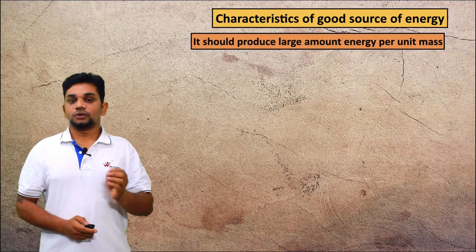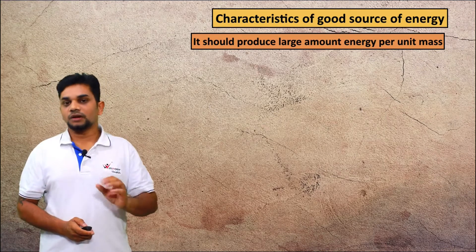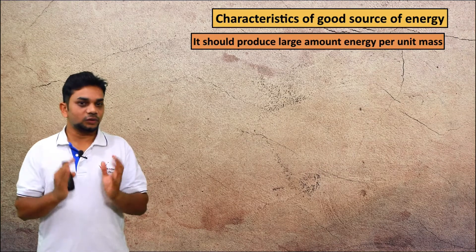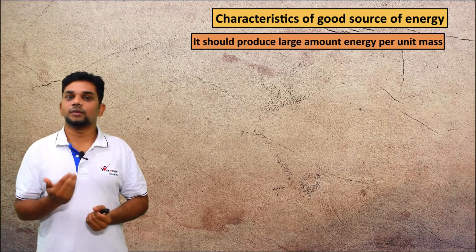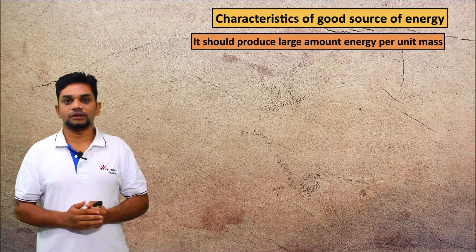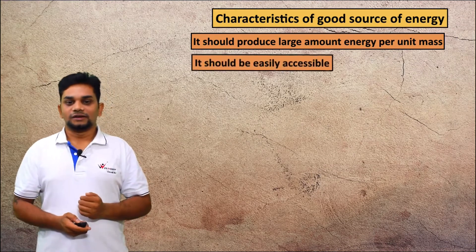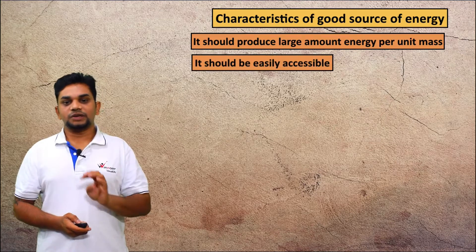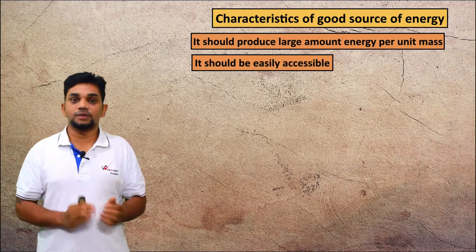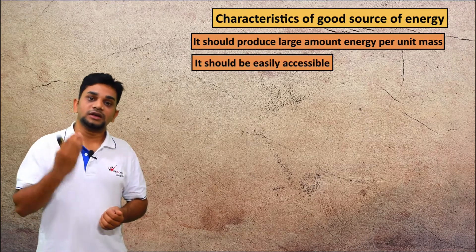First, it should produce a large amount of energy per unit mass. Why we are using sources of energy? To get energy. So each source of energy should produce a large amount of heat. If one energy source is producing a large amount of heat, then that is a good source of energy. Next, it should be easily accessible. We need to use the energy; the usage should be very easy.